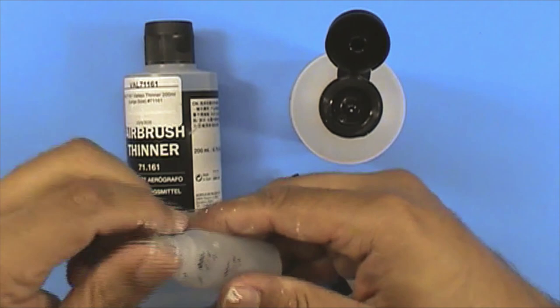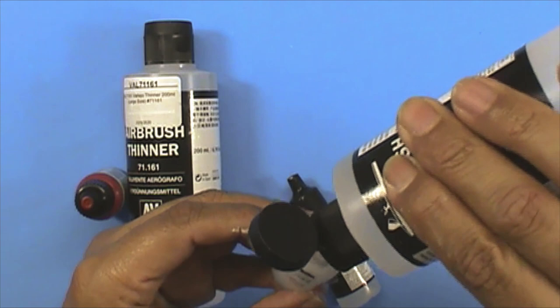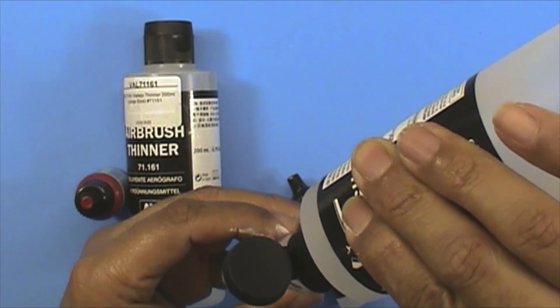So the equation is 70% of the flow improver, followed by 30% of the airbrush thinner.